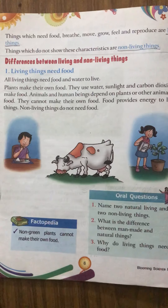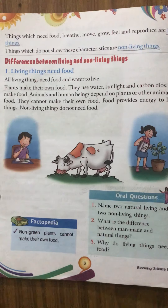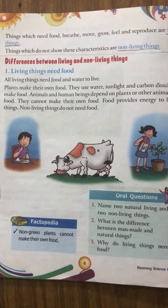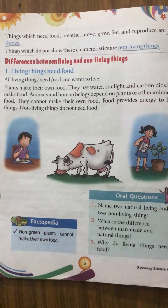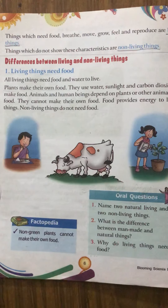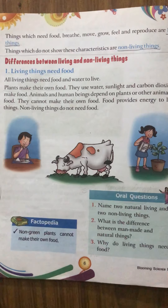Plants are also living things, but plants make their own food. They use water, sunlight, carbon dioxide, and they also absorb minerals from the soil. With the help of all these things, they make their food.